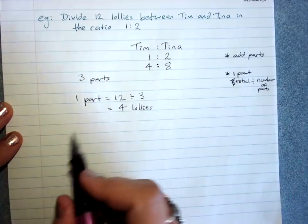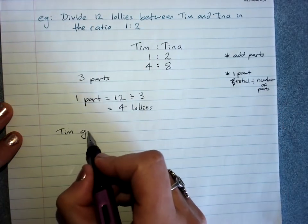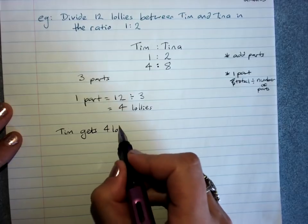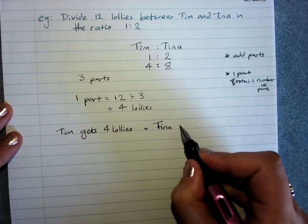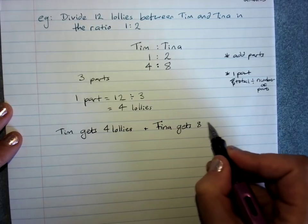Because it's a word question, word answer. Tim gets four lollies and Tina gets eight lollies.